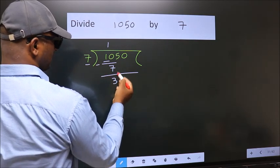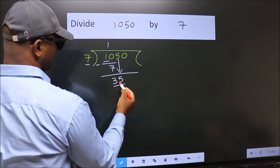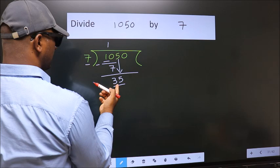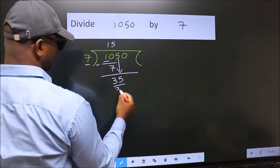After this, bring down the beside number. So 5 down. So 35. When do we get 35? In 7 table. 7 fives, 35.